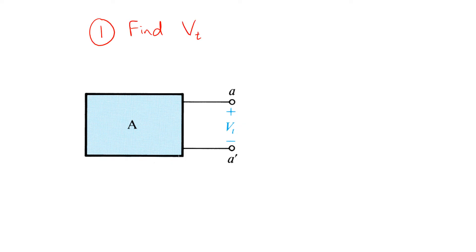Step one is to find Vt. We do so by creating an open circuit at the port A, A prime, and analyze the resulting network to find the voltage Vt.